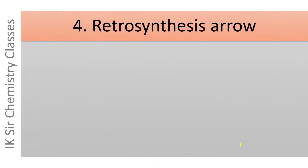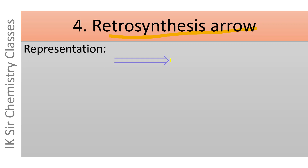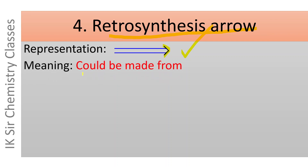Finally, let us see the retrosynthesis arrow. It is represented by an arrow where two parallel lines are given and the arrowhead is made at the end of those two parallel lines — the two lines are not attached together. This retrosynthesis arrow means 'could be made from.' Let us illustrate it with an example.